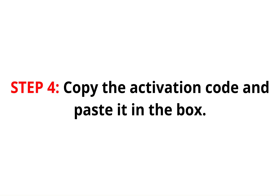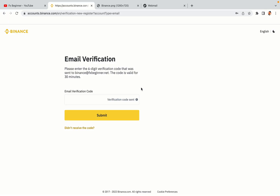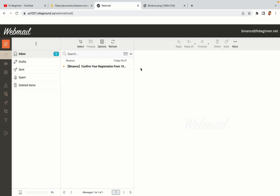Step 4: A confirmation code will be sent to your mail. Open your mail inbox, copy the code and paste it in the box to fully activate your Binance trading account.